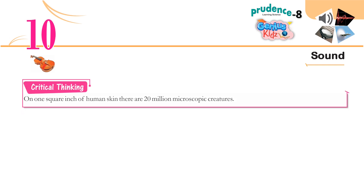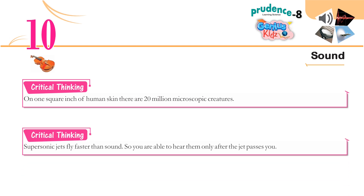Critical thinking: on one square inch of human skin there are 20 million microscopic creatures. Supersonic jets fly faster than sound, so you are able to hear them only after the jet passes you.